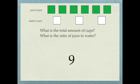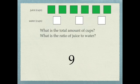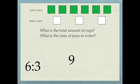What is the ratio of juice to water? Well juice is green, water is white. That would be six to three. But look at my next question. I could ask you the opposite.